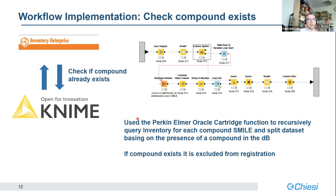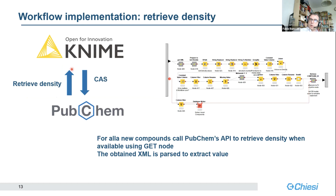Then, quite easily, we check if the compound exists in the database. For this purpose we used the cartridge available in the Perkin Elmer application environment, and it was quite easy to make use of the SMILES available from SharePoint to search for that specific molecule in our database. In case the compound exists, just retrieve the ID. In case it doesn't, the workflow registers the compound as a new molecule within inventory. In case the compound does not exist, we also interrogate PubChem to retrieve the density, so that for those compounds that are liquid we can add this piece of data as well.